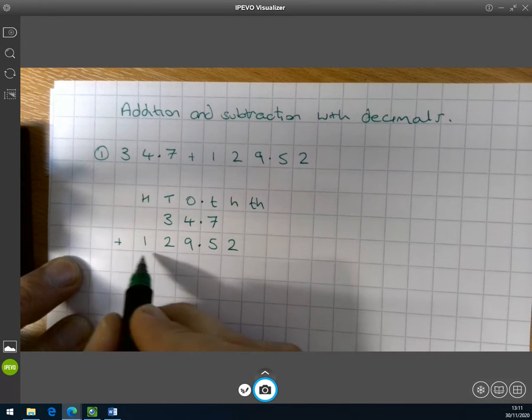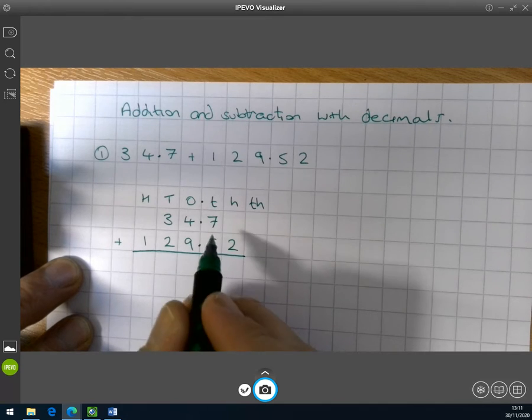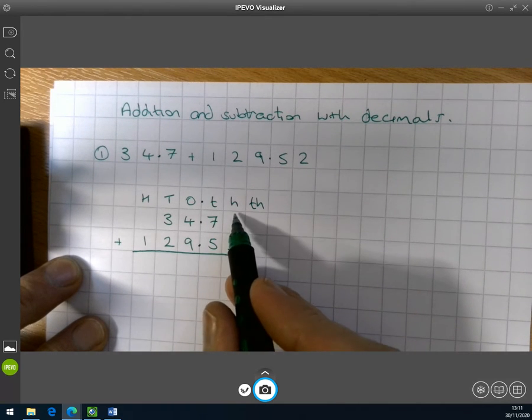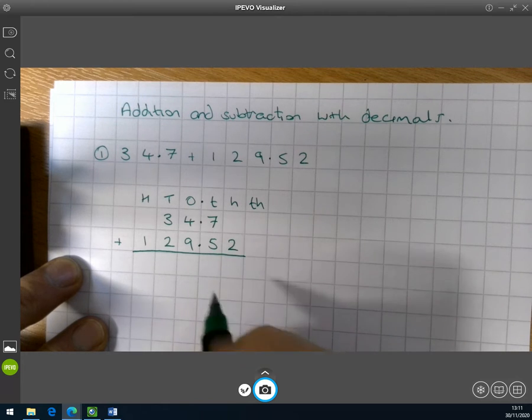So now we're on to our addition. This is just the same as if we were adding with whole numbers, with integers. So we're looking at our smallest column first in the hundredths. We've got nothing there, so we've only got two hundredths.